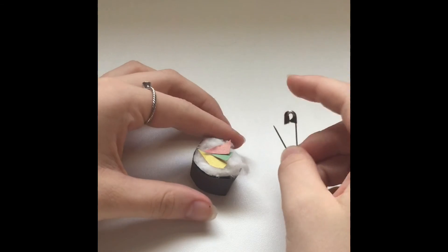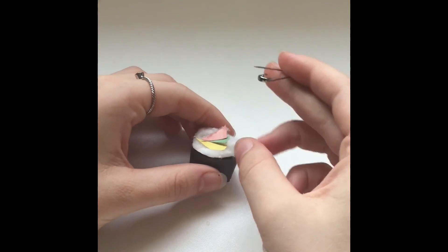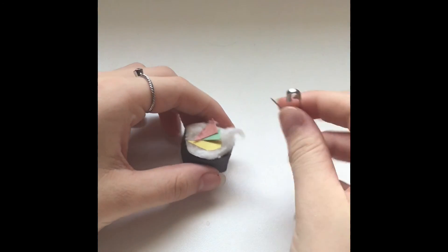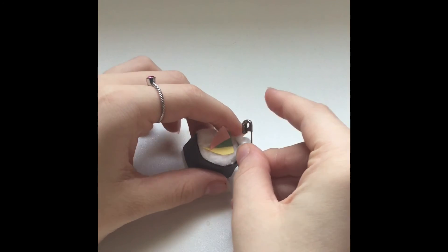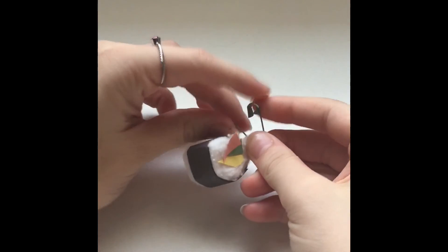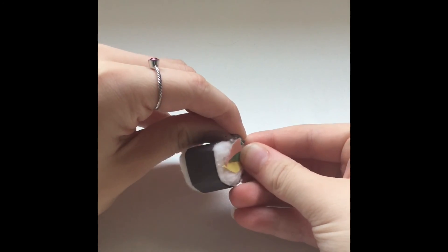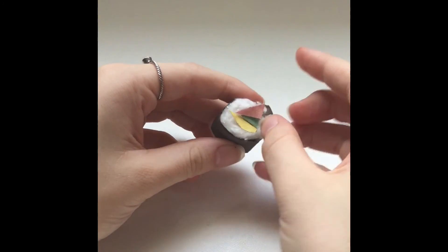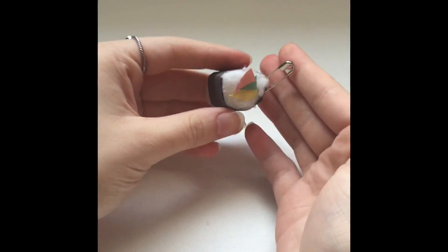Once you're done gluing those pieces on, you can just take your safety pin, pull out a little piece of the cotton, just stick that right through. Be careful you don't poke yourself on it. Close it off, put that back in, and then you're done.